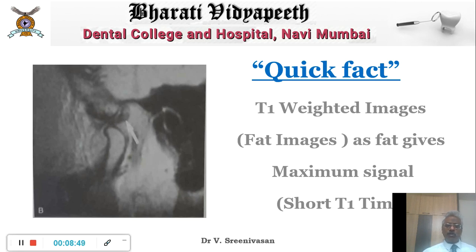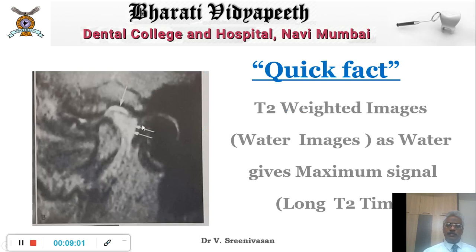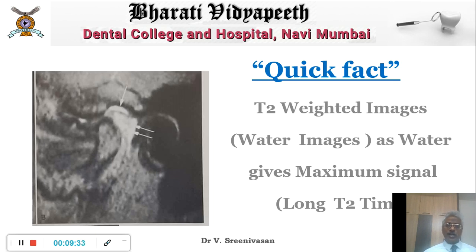T1 weighted images, or fat images, are very good to study the anatomic structure of the tissue being examined. However, T2 weighted images, or water images, give a very powerful signal — here there is effusion in the joint space which gives a very strong signal. Strong signals are seen as white; weak signals such as cortex are seen as black. Cortex is black in both T1 and T2 weighted images, whereas fat is whiter in T1 and water is distinctly whiter in T2 weighted images.